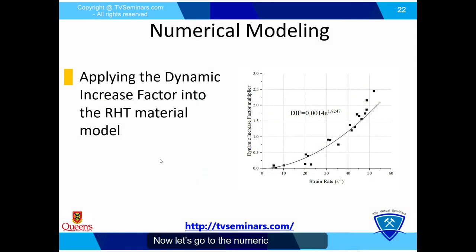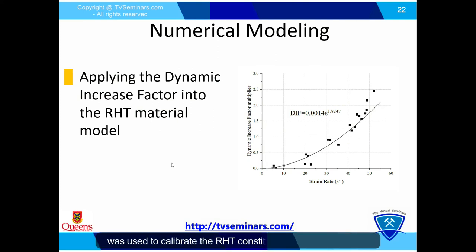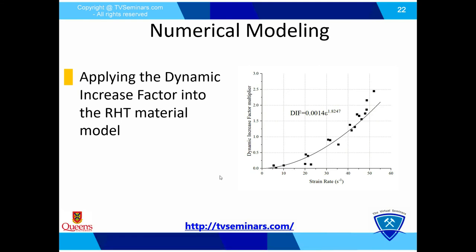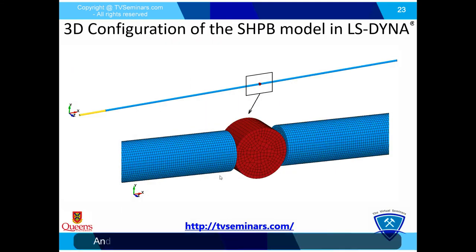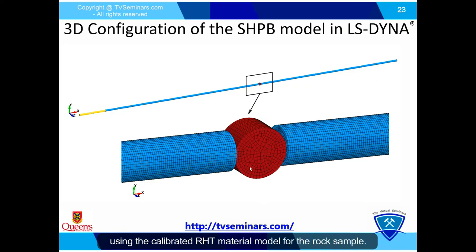Now let's go to the numerical modeling. The strain rate dependency behavior achieved from the experiments was used to calibrate the RHD constitutive model in LS-Dyna. We then modeled the Split-Hopkinson pressure bar experiments and the Hopkinson bar experiments in LS-Dyna using the calibrated RHD material model for the rock sample.